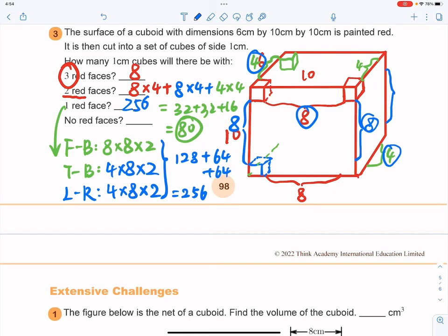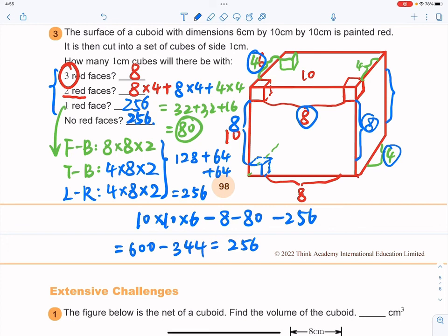So how many of cubes do we have that are not painted at all? The way that you can do is that you use how many cubes in total take away the numbers of 3 red faces, the sum of 3 red faces, 2 red faces and 1 red face. So that will be 10 times 10 times 6, take away 8, take away 80, take away 256. So see what you got. You got 600 take away 88 plus 256, which is 344. So you find there will be 256 cubes that are not painted at all. So that will be the answer to this question.